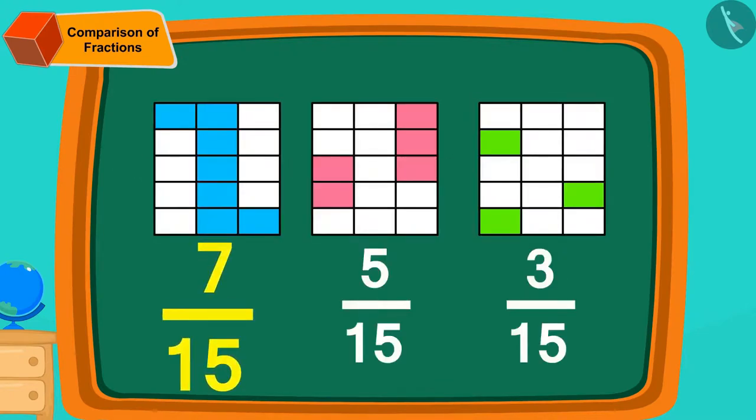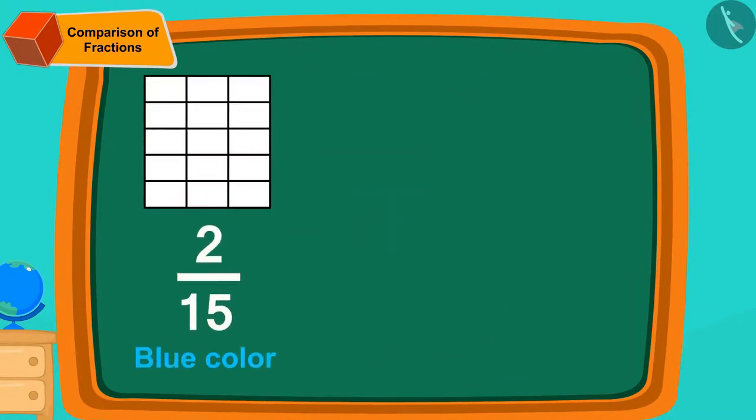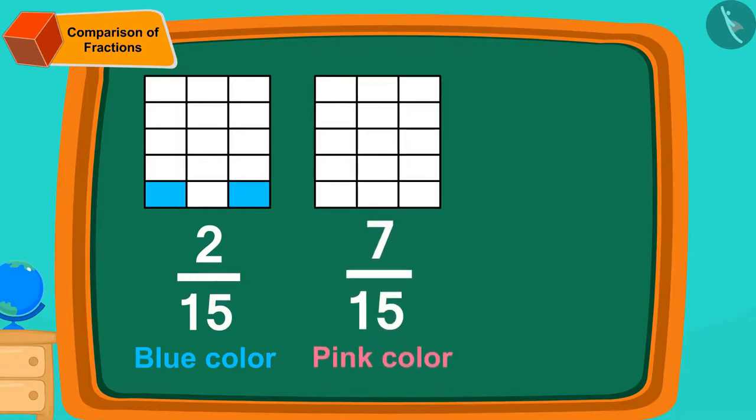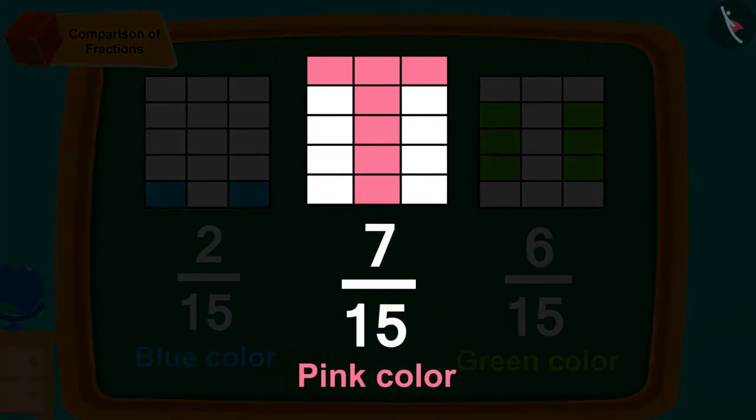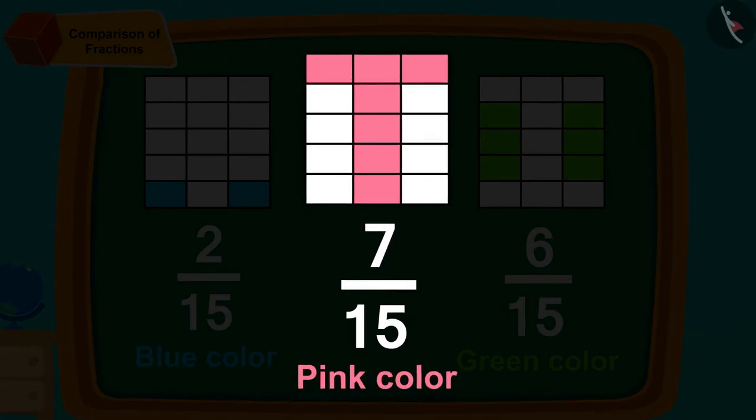Children, if we have filled blue colour in two parts out of 15 parts, pink colour in seven parts, and green colour in six parts, can you then identify the largest of these fractions? If you wish to, you can stop the video and find the answer. Well done, children, you have found the answer correctly. The largest fraction here is 7 fifteenths.